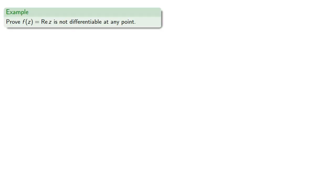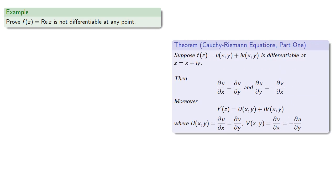For example, suppose we want to prove that the real part of z is not differentiable at any point. So let's pull in the Cauchy-Riemann equations. First, we want to write our function in terms of its real and complex components. If z is a complex number x plus iy, f of z is x, and this tells us that u of xy is x and v of xy is 0.